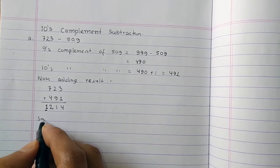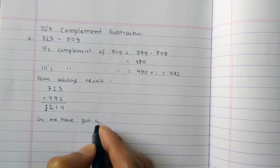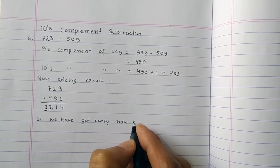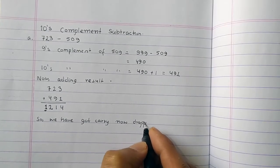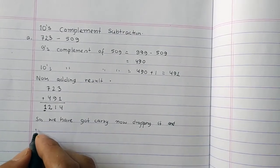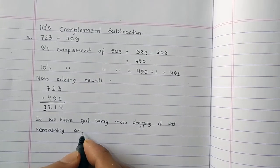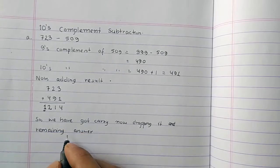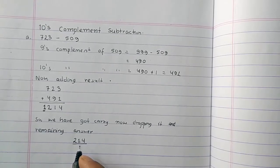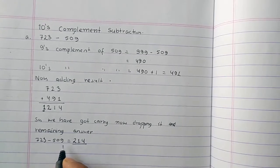We have got carry now, dropping it and the remaining is the answer. So 723 minus 509 equals 214. That is the answer.